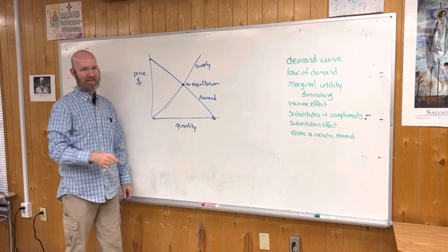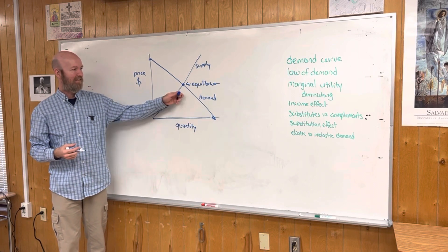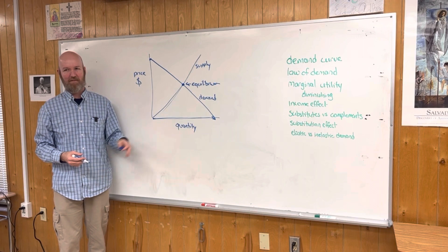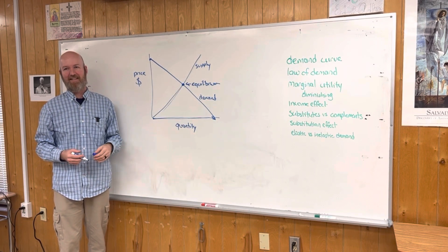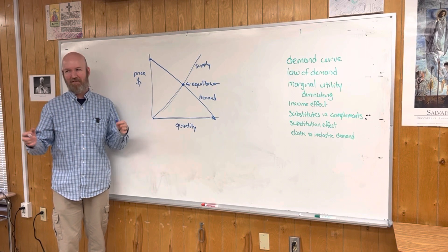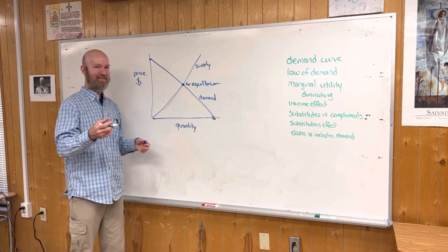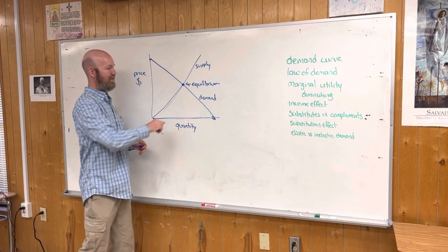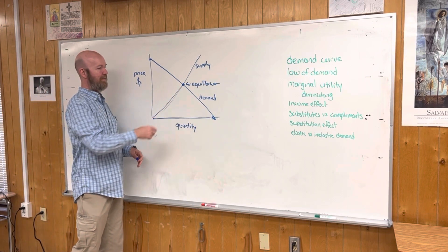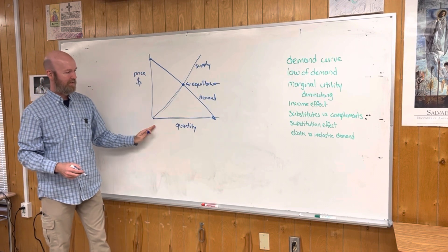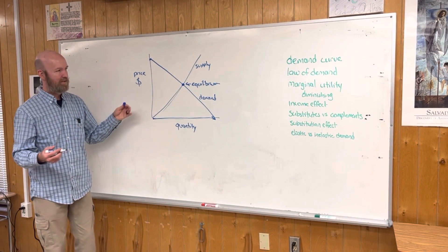Do we need a central government to tell us where this is and how much to produce? No. Instead, what do we have? How do producers know how much to produce? That's Adam Smith's phrase — the invisible hand. The invisible hand guides the economy. People don't have to plan it; they just figure it out. So that is the demand curve. The law of demand simply shows that as price decreases, quantity demanded increases, and as price goes up, quantity demanded goes down.